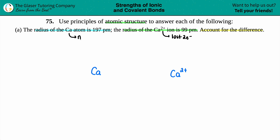Calcium has a principal quantum number of n equals 4, so it has four rings technically around the nucleus. Here is the nucleus, and let's draw it out.